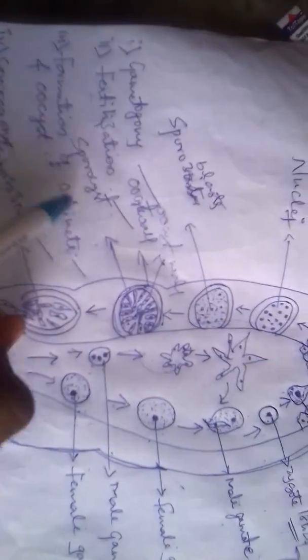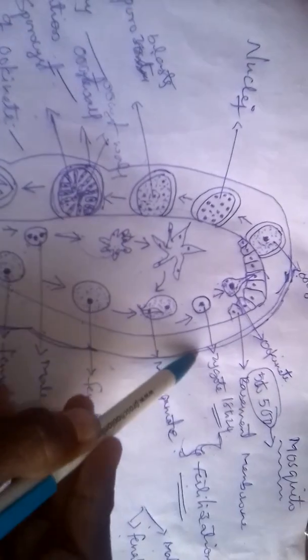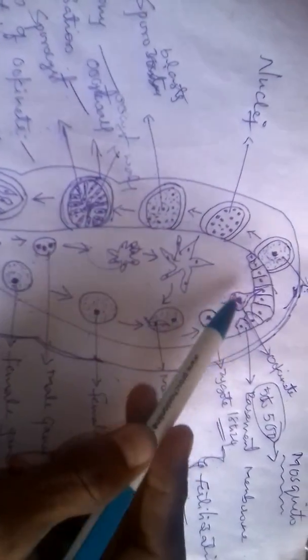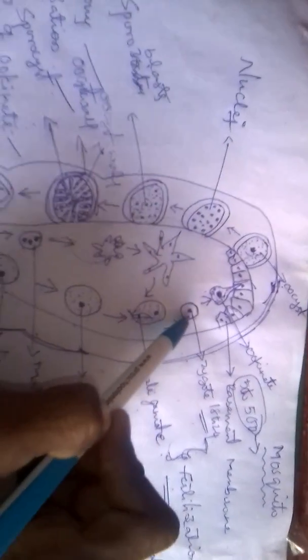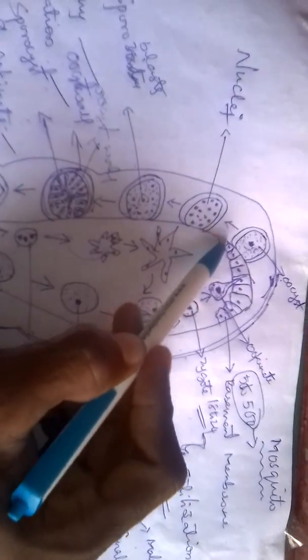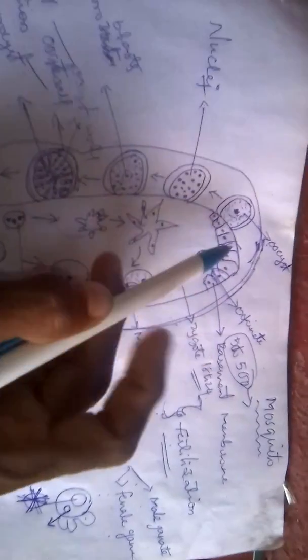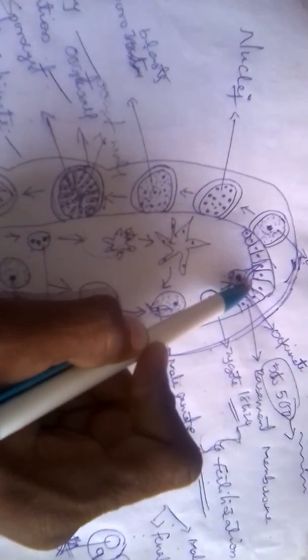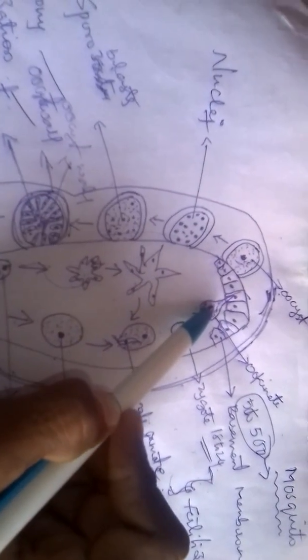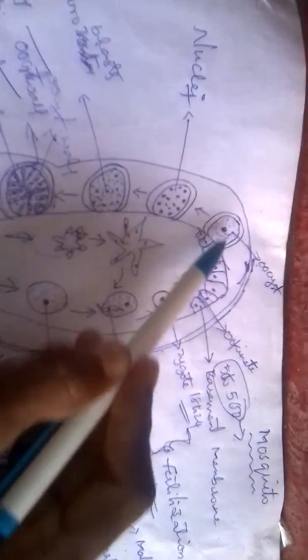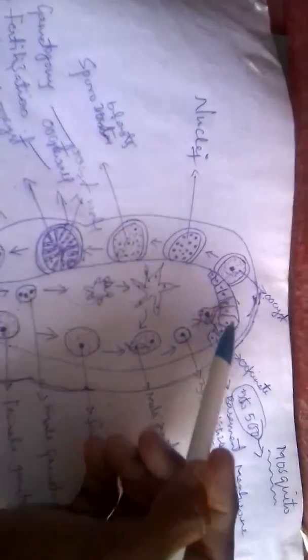This zygote remains inactive for 18 to 24 hours, and after that time, ookinetes are produced from the zygote. The ookinete penetrates the basement membrane of the crop of the mosquito. These box-like structures are called the basement membrane. The ookinete then produces 50 to 500 oocysts. This is called the formation of ookinete and oocyst.